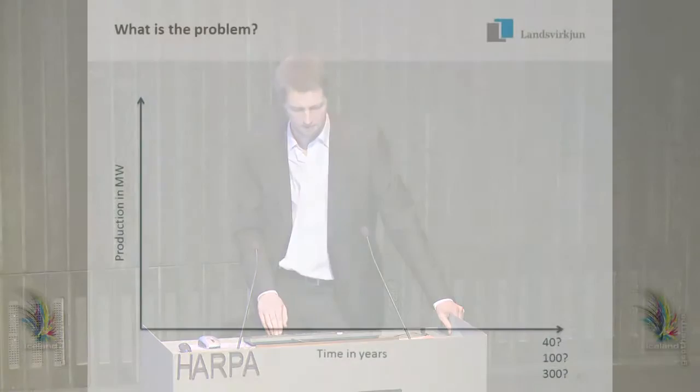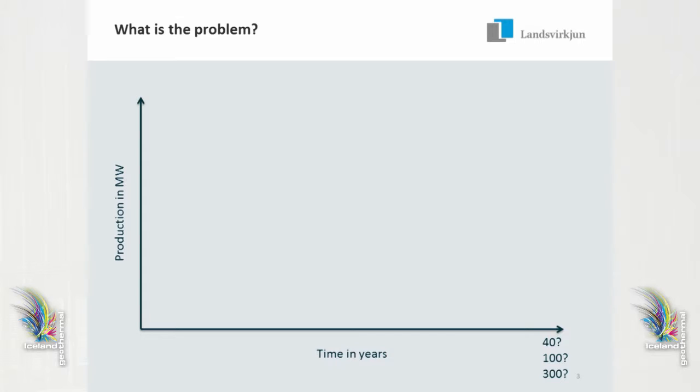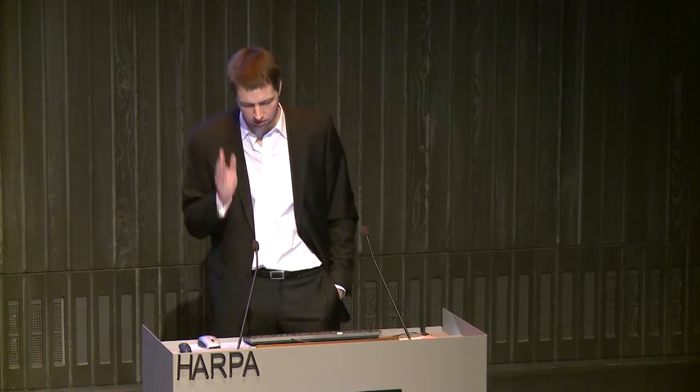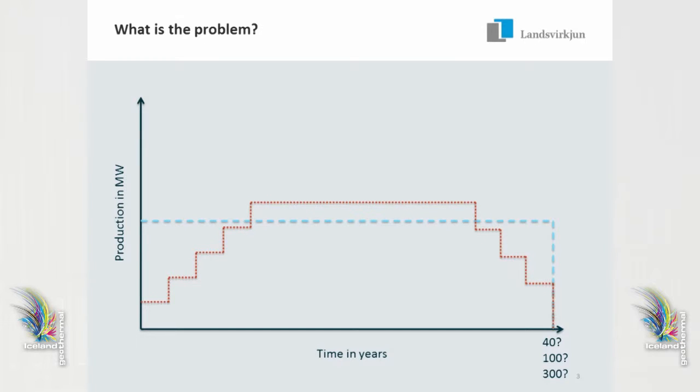The question I'm really trying to answer is: how should we be producing from these reservoirs? Should we go up in one step — find the optimal size of the power plant and produce at a constant rate for some number of years, whether that's 40, 100, or 300 years? Or do we maybe build up in modular phases — building up the power plant capacity in maybe three or four phases, like I show in this picture?